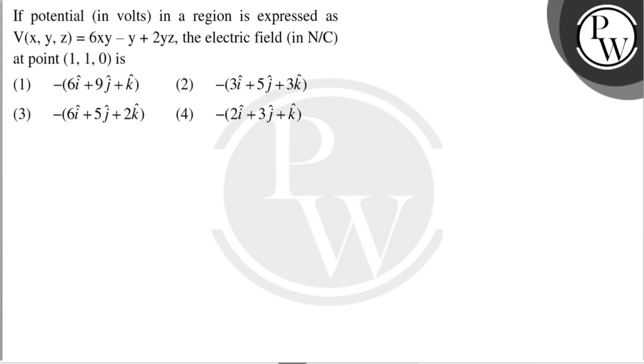Hello, let's read the question. Question says, if potential in volts in a region is expressed as V(x,y,z) equals 6xy minus y plus 2yz, the electric field in Newton per Coulomb at point (1,1,0) is?